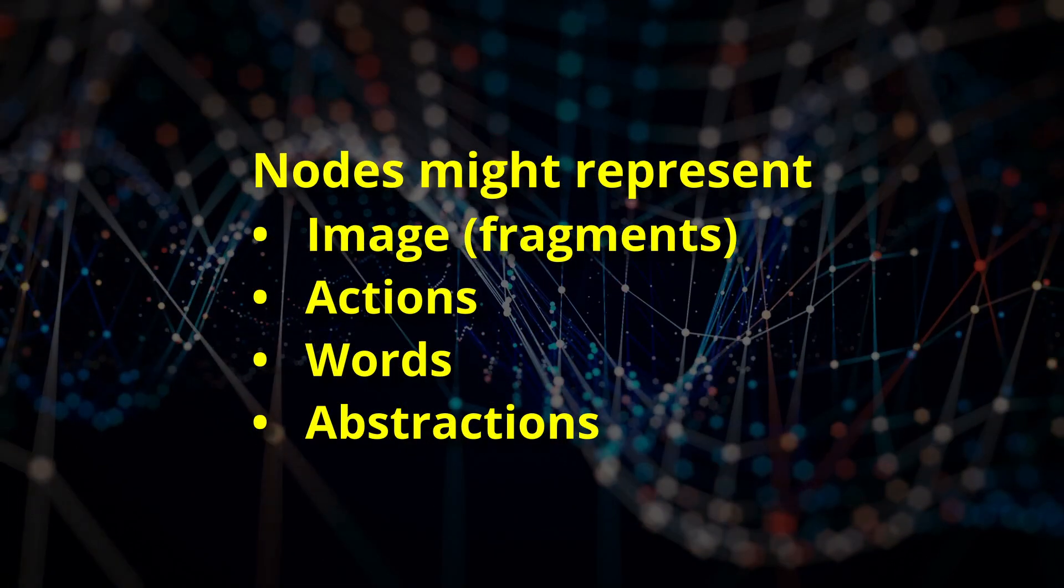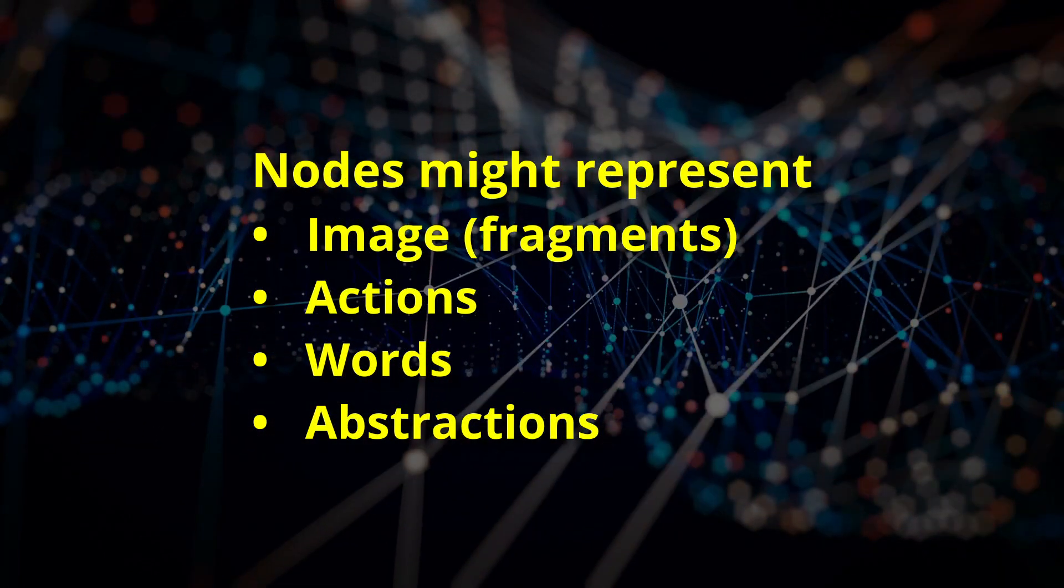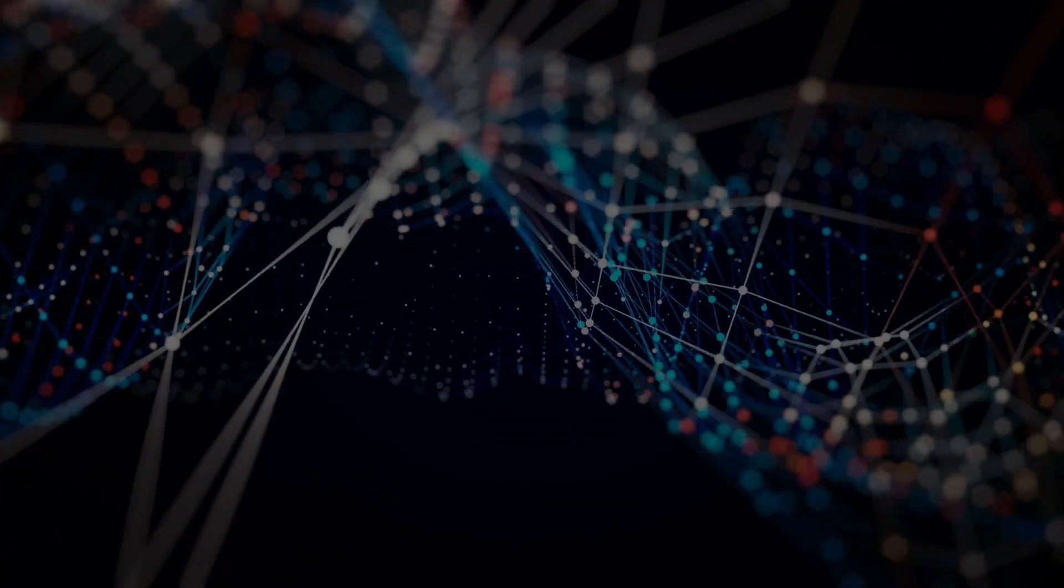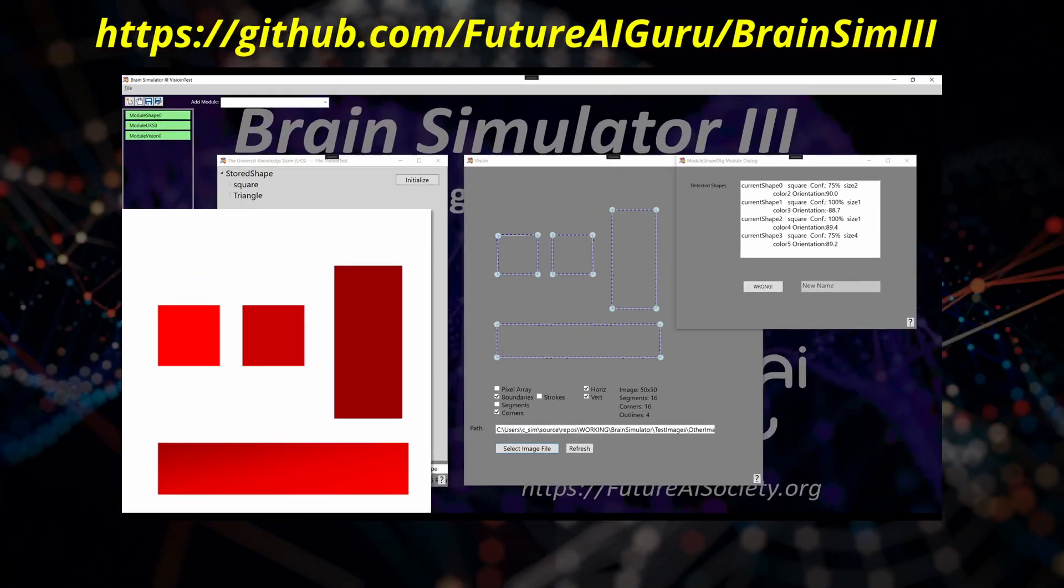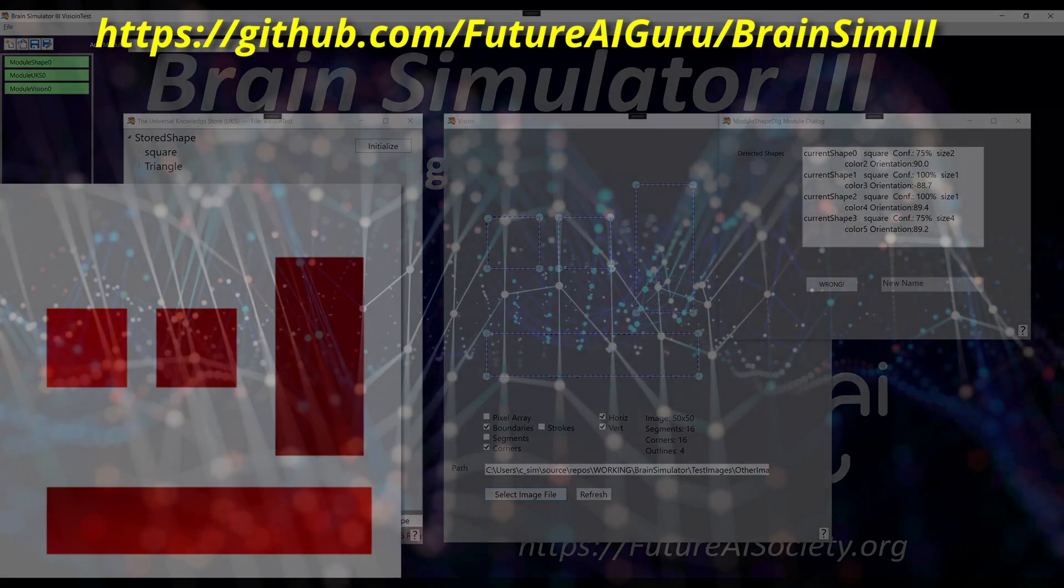In fact, anything which the brain can think can be represented in an enhanced knowledge graph. All of these features have been implemented in the Prototype Universal Knowledge Store, or UKS, which you can access on GitHub and try out.